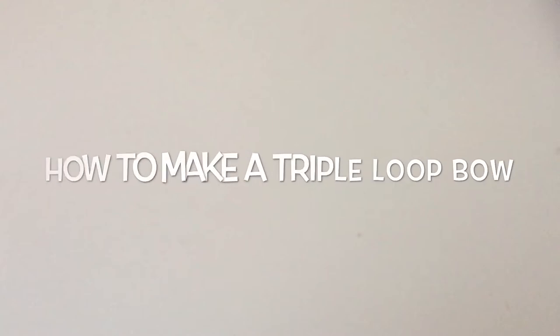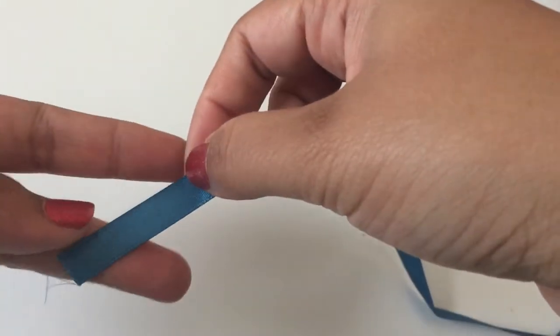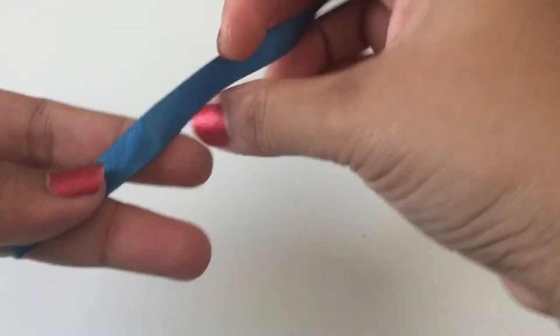Hello everyone, I am going to show you how I make triple loop bow. Take a piece of ribbon, hold one end of the ribbon tightly between your thumb and your middle finger leaving a small tail.